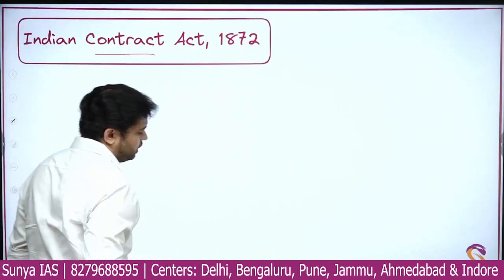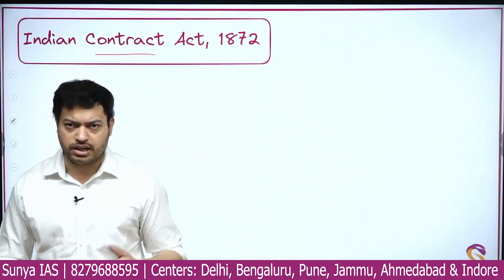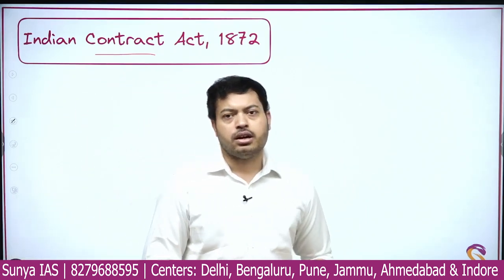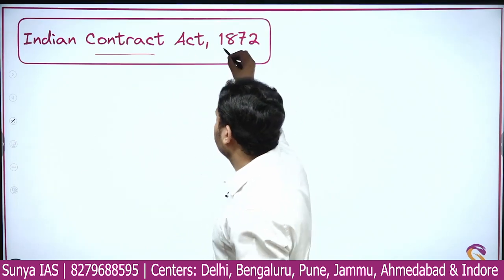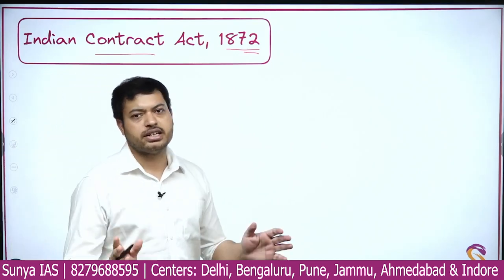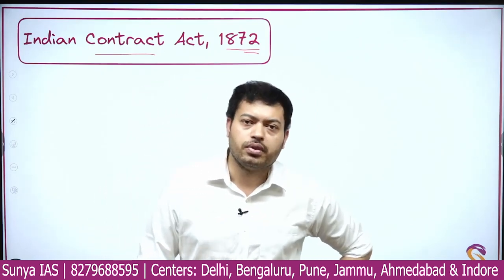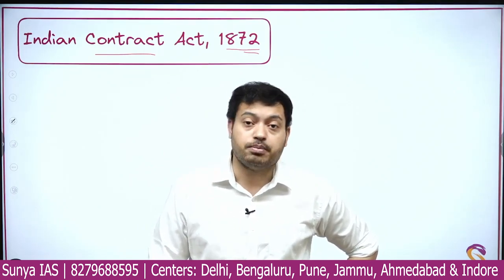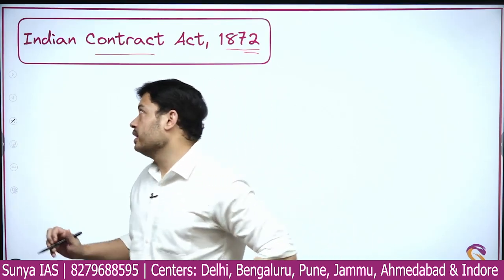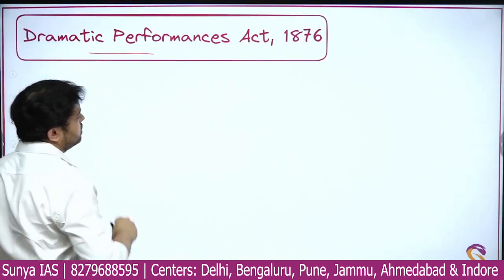The Indian Contract Act is still implemented, obviously with a lot of amendments as per present-day requirements. It goes back to 1872 — that was the first time the British decided that a proper legislative code had to be defined for how contracts between people, businesses, and institutions have to be done. The Indian Contract Act addresses that. Next is the Dramatic Performance Act 1876 — you must have heard about the Vernacular Press Act and the Arms Act, both from 1878, related to Lord Lytton.